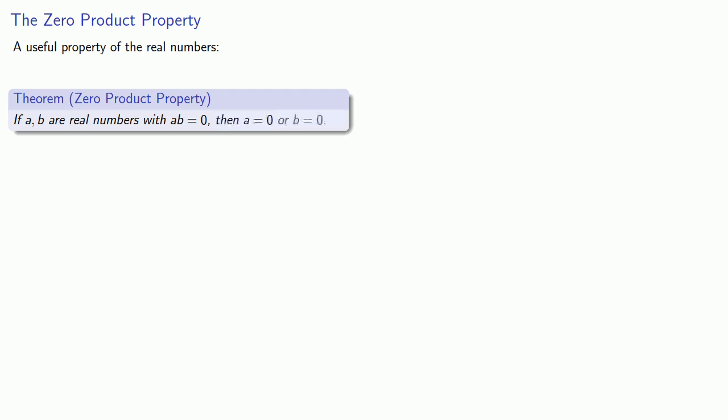A useful property of the real numbers is known as the zero product property. If a and b are real numbers with a times b equal to zero, then we know with absolute certainty that either a is zero or b is zero.